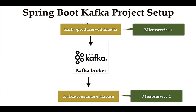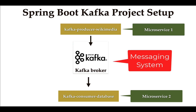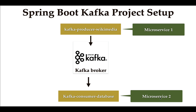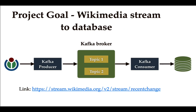At a high level, this is how the Spring Boot Kafka project setup looks like. We are going to create two projects as microservices: the first is Kafka producer Wikimedia as microservice one, and Kafka consumer database as microservice two. We are going to use Apache Kafka as a messaging system to exchange messages between microservice one and microservice two. I will see you in the next lecture.